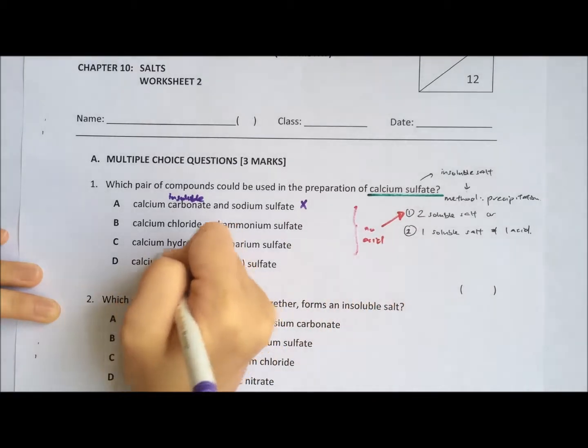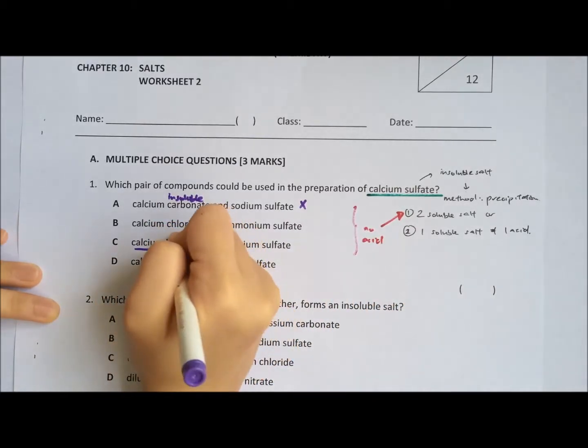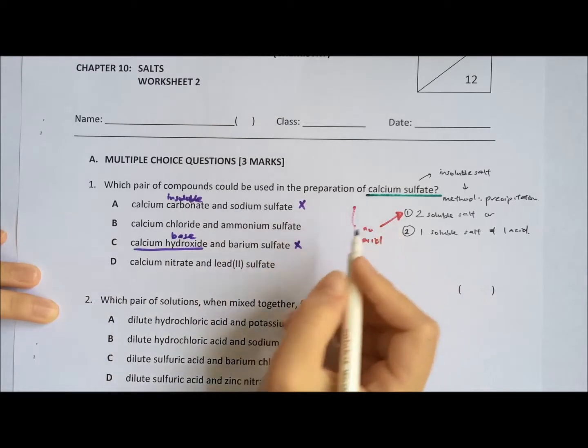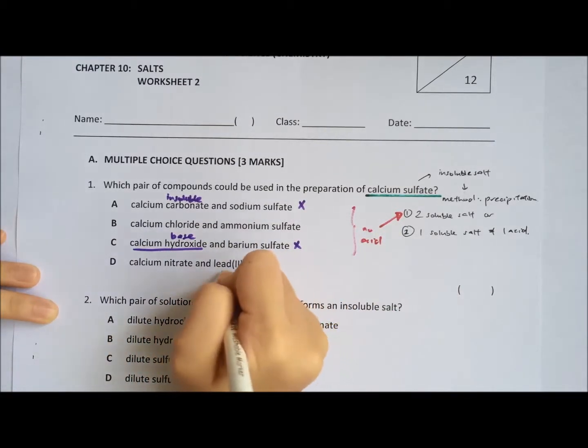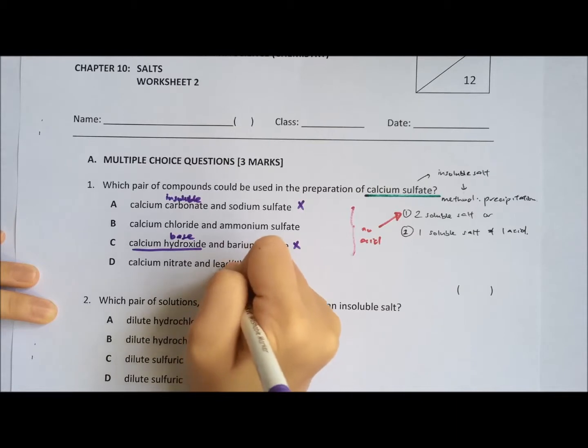We will skip option B and look at option C first. Option C, calcium hydroxide is a base. There is no reaction of base, so C is wrong.